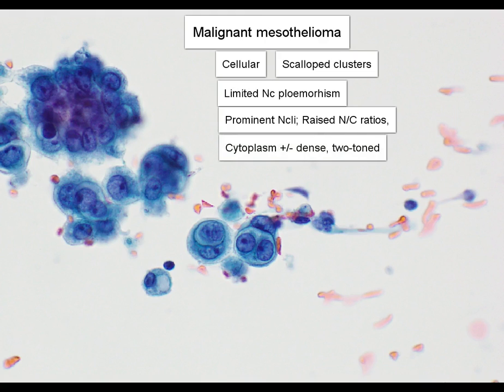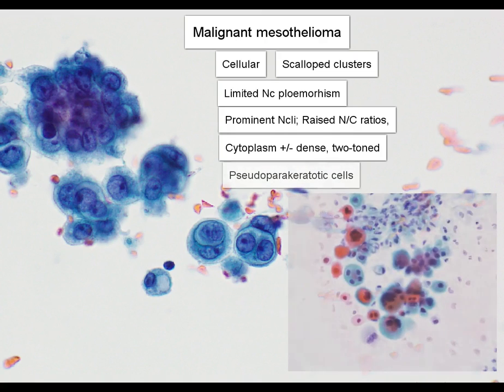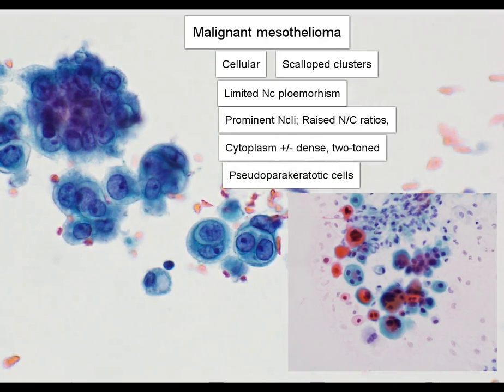Another feature that we sometimes see in the alcohol-fixed Papanicolaou stain smears are small, orangophilic pseudoparakeratotic cells. These are not seen in this particular case.